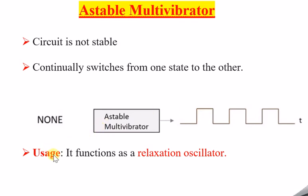Now we will understand the use case of the astable multivibrator. It functions as a relaxation oscillator. Why does it function as a relaxation oscillator? A relaxation oscillator is continuously used in the generation of signals with positive feedback. It continuously generates oscillations because of positive feedback. Since the astable multivibrator continuously switches one state after the other, we can say it acts as a relaxation oscillator. But why specifically the word 'relaxation' and not just 'oscillator'?